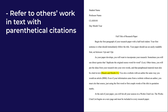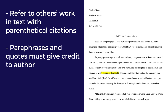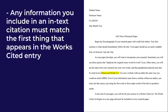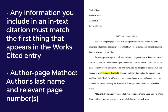In MLA style, referring to the works of others in your text is done using parenthetical citations. Anytime that you paraphrase or quote someone else's words or ideas within the body of your paper, you must give credit to the original author with an in-text citation. This method involves providing relevant source information in parentheses whenever a sentence uses a quotation or paraphrase. The in-text citation refers the reader to the full reference in the works cited list at the end of the paper. The rule of thumb is that any information you include in the in-text citation must match the first thing that appears in the corresponding works cited entry. Usually this will be the author's name. MLA format follows something called the author-page method of an in-text citation, which requires the inclusion of the author's last name and the relevant page number or numbers within the text.